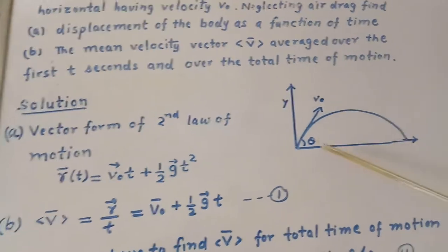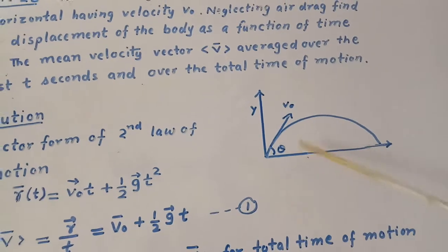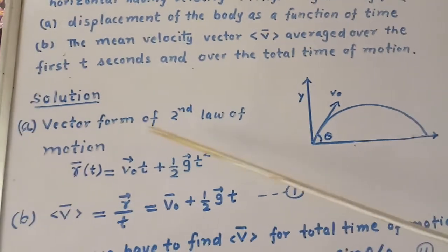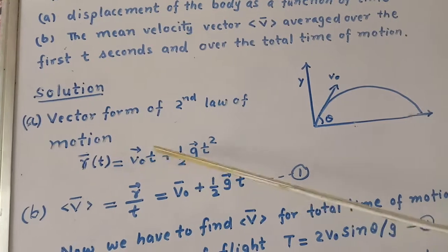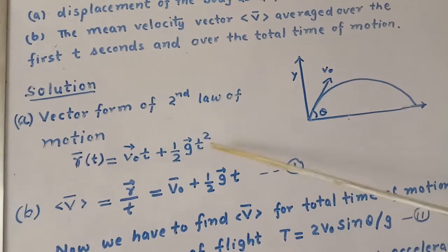Here the diagram is shown. The body is projected with velocity V0 at angle theta. According to the second law of motion, we write its vector form: R equals V0 T plus half G T squared.